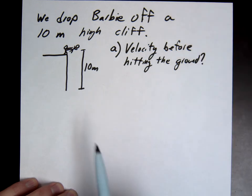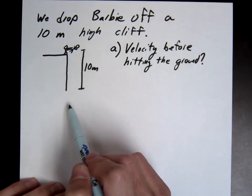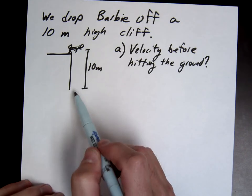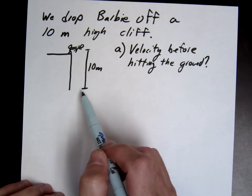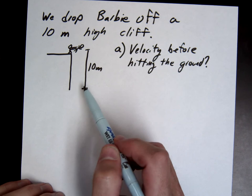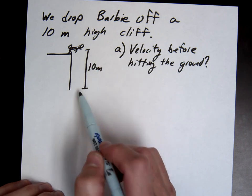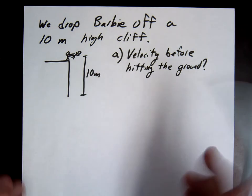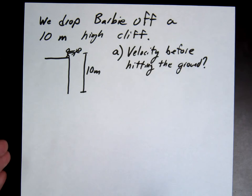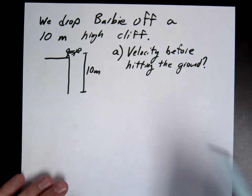So what I mean by this is right before she strikes the ground. So obviously when she hits the ground, what's her velocity final? Zero. Zero, okay. But whenever I state this, I mean the instant before she hits the ground, how fast is she moving, before the impact.